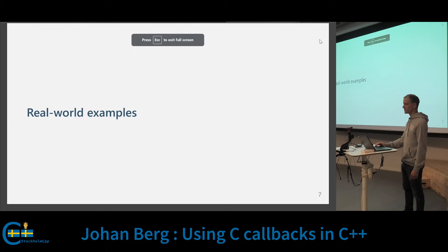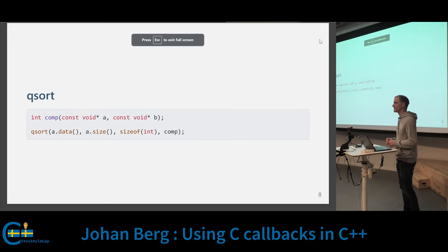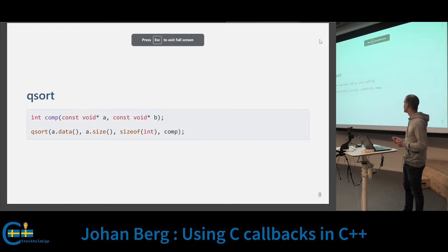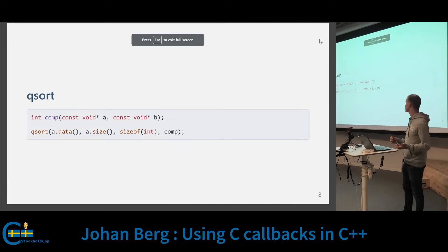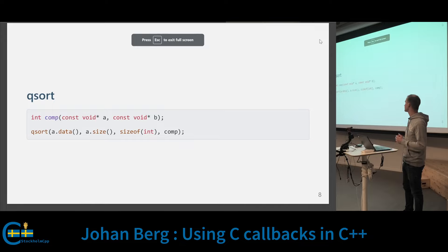Let's look at a few real world examples. First, we have the qsort function, used to sort an array of data. You pass the array, and the last argument is the callback function used to compare two elements in the array. This is a synchronous callback because the callback function will be called inside qsort, and when qsort returns, the array will be sorted. This is usually a multi-shot callback because, depending on the size of the array, the callback will be called multiple times.